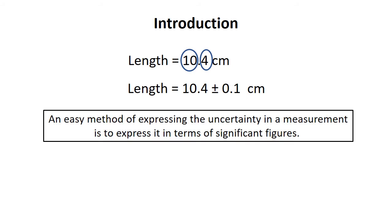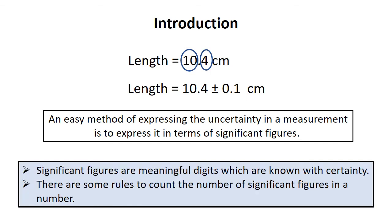An easy method of expressing the uncertainty in a measurement is to express it in terms of significant figures. Significant figures are meaningful digits which are known with certainty. There are some rules to count the number of significant figures in a number.